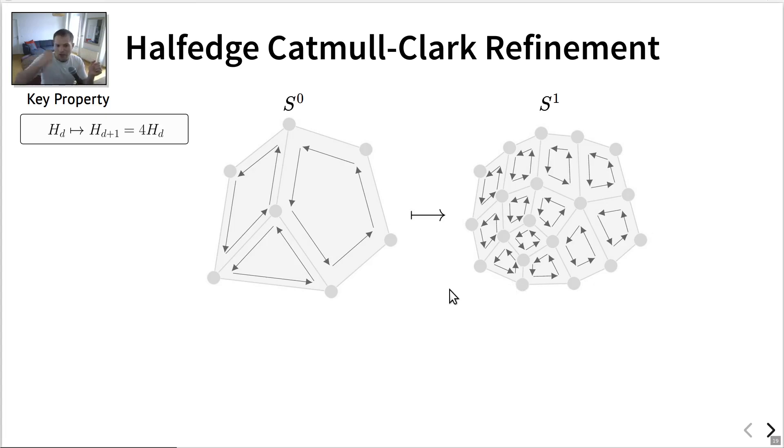which is that the number of half-edges after each refinement step is multiplied by exactly four. And this is quite powerful because it's invariant and it works even if the underlying mesh has non-quad faces. For instance, here you have a triangle and a pentagon and the number of half-edges is multiplied by four anyways. So based on this simple observation, we derived our entire paper. So this is pretty much the insight, the main insight I expect you to take away after this presentation. Very easy though.